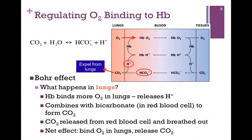In the lungs, the partial pressure is very high for oxygen, and that means hemoglobin will readily bind the oxygen. As it does so, it releases H-plus. The H-plus will combine with the bicarbonate in the red blood cell to form CO2, and that will readily diffuse through the red blood cell membrane and get expelled from the lungs. So the net effect is that we bind oxygen in the lungs and release CO2.